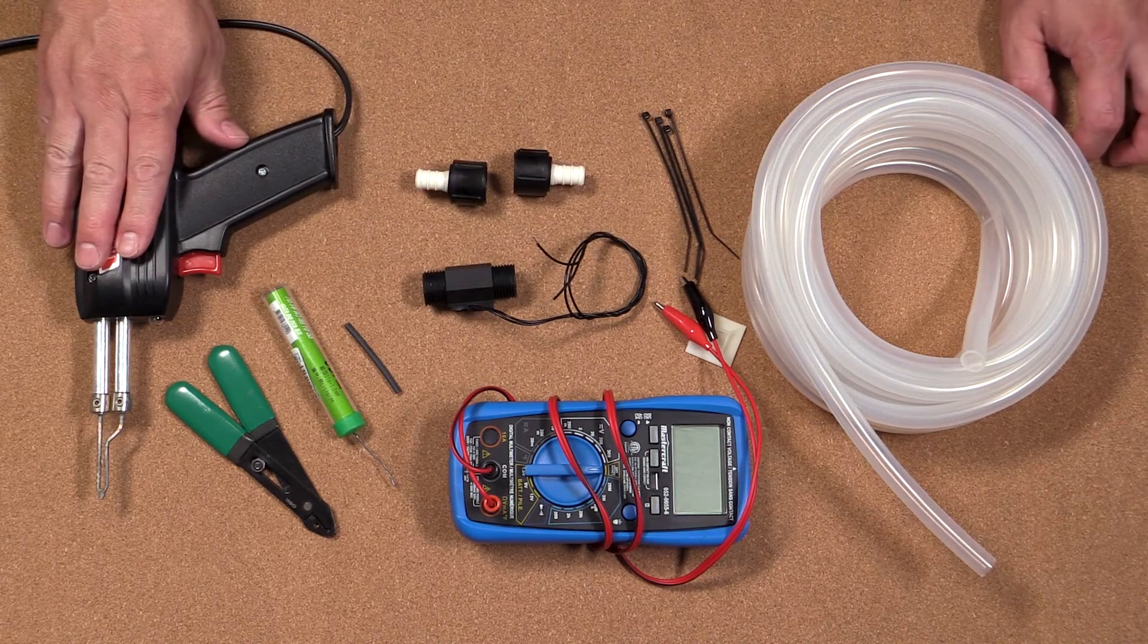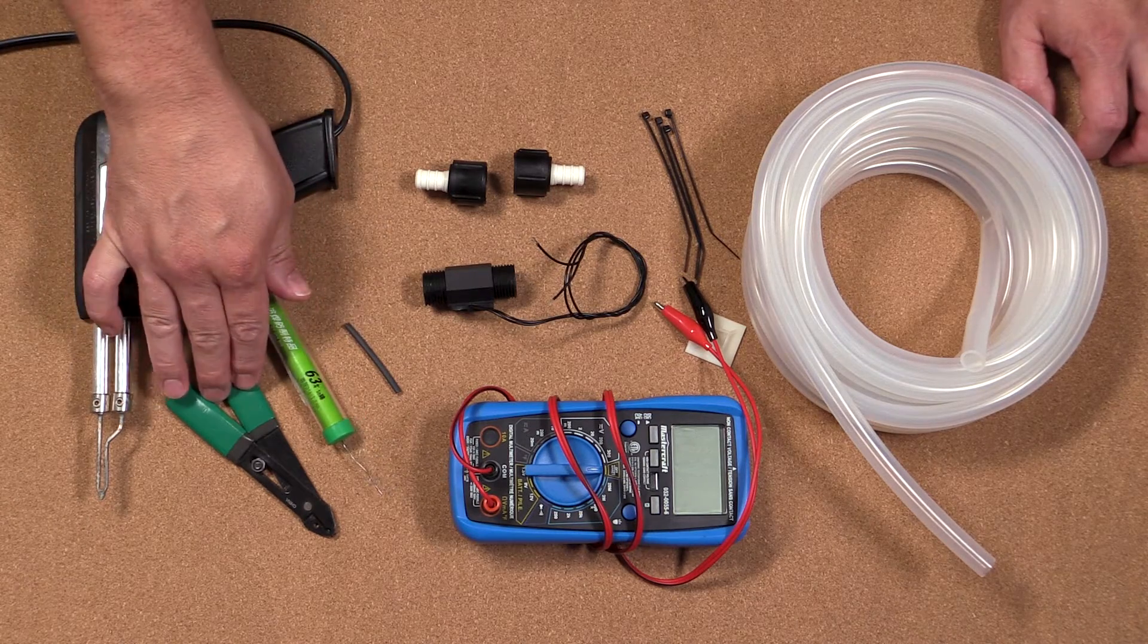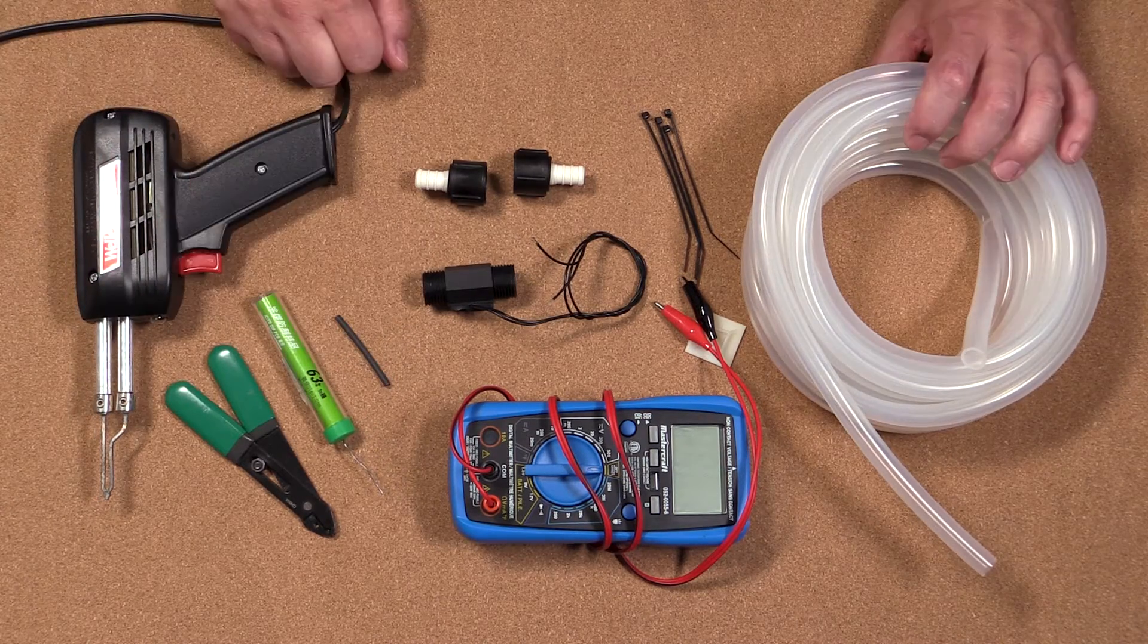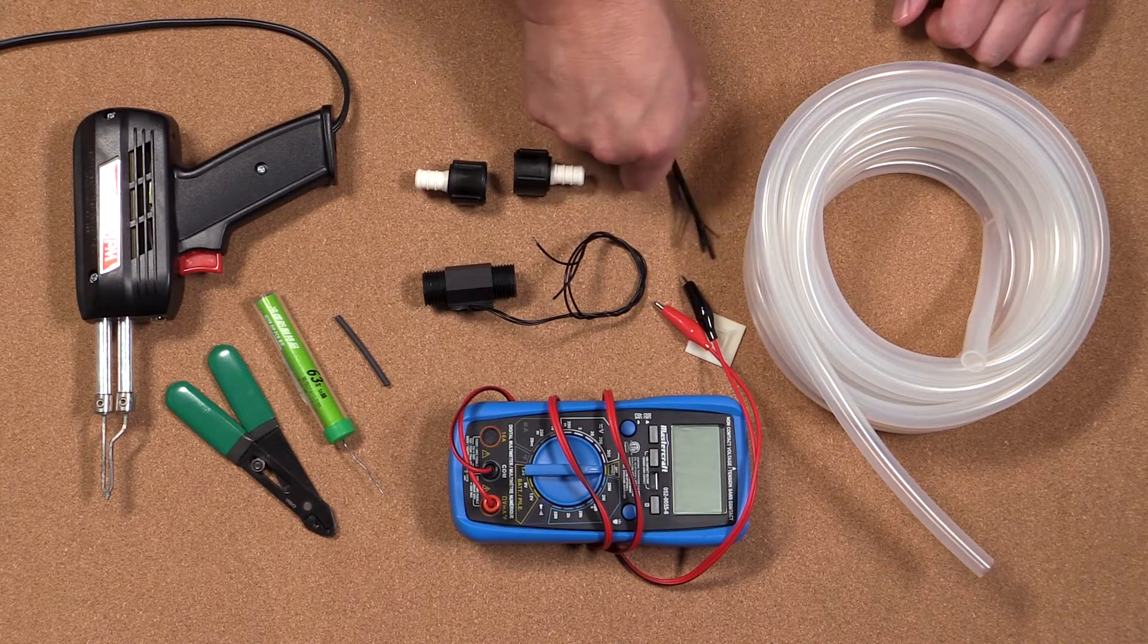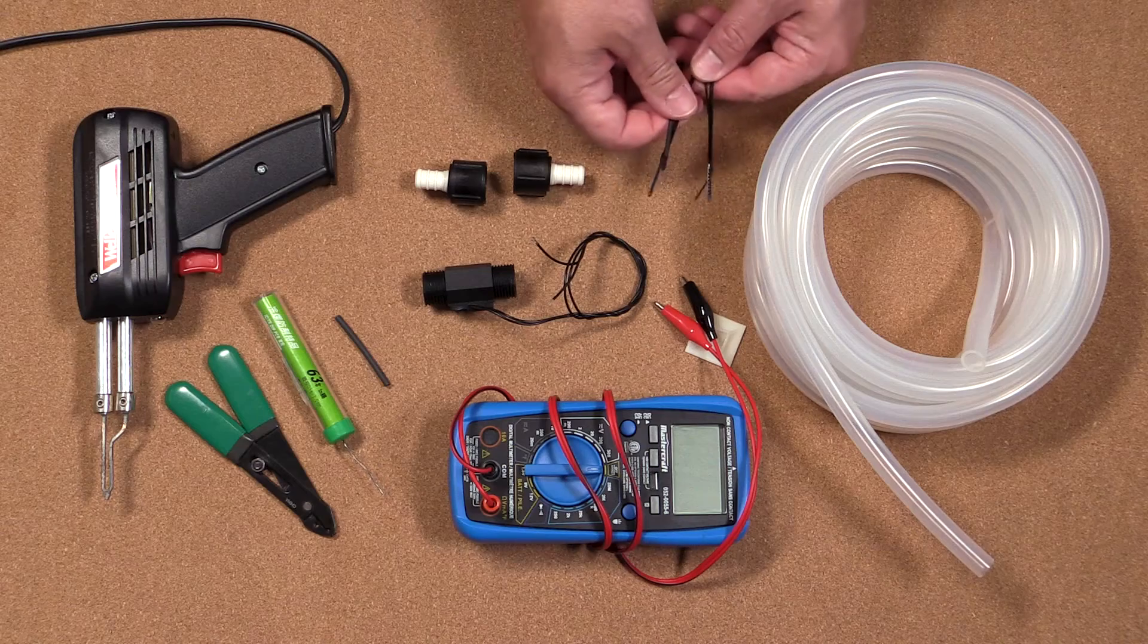You'll need a soldering gun and some solder, wire strippers and cutters, some shrink tube. Since I'm replacing my tubing, I have some new silicone tubing here and you'll also want some small zip straps to secure your hosing.